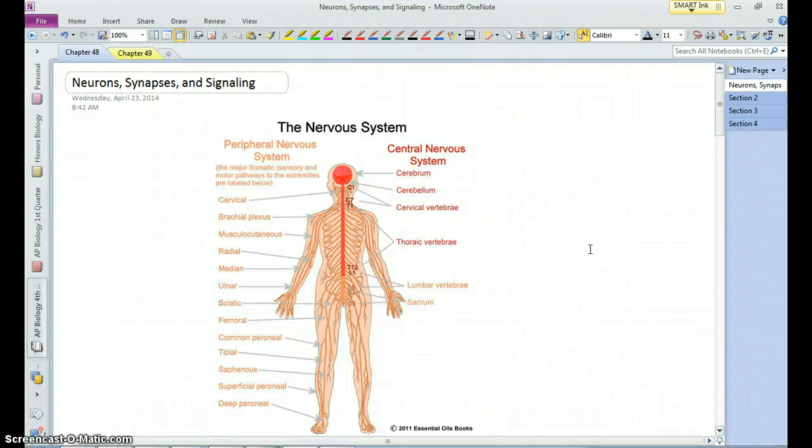We're going to talk about Chapter 48 now, the first chapter of the nervous system. Here we'll mostly talk about the basic functioning of neurons, but let's just take a look at the nervous system.